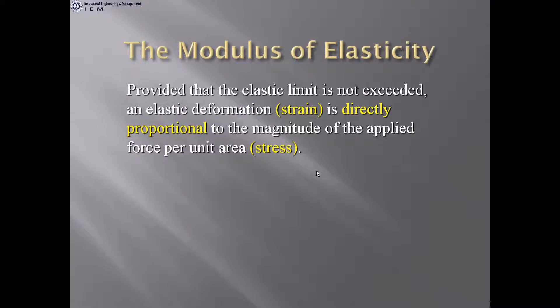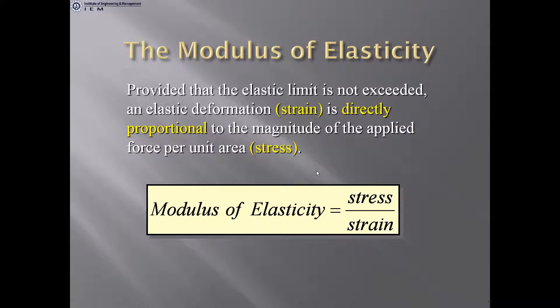The modulus of elasticity: provided the elastic limit is not exceeded, elastic deformation strain is directly proportional to the magnitude of the applied force per unit area — that is, the stress. The modulus of elasticity = stress / strain. It is the slope of the straight-line portion of the stress-strain curve for a mild steel.